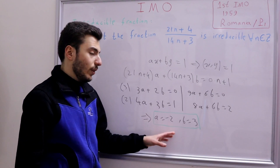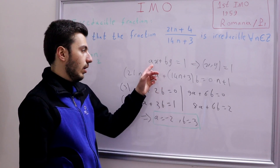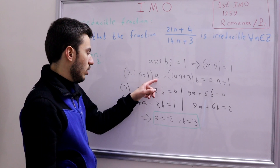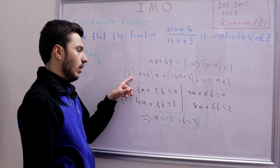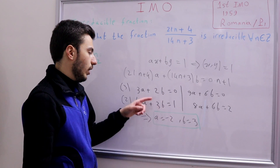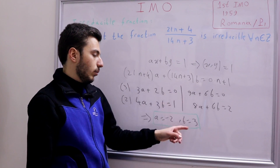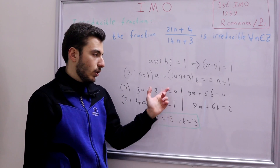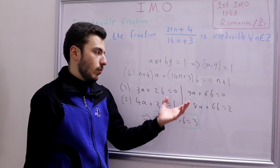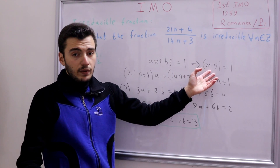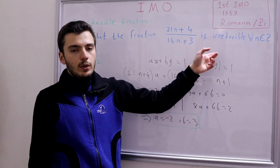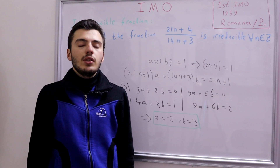Let's verify: (−2)(21n+4) + 3(14n+3) = −42n − 8 + 42n + 9 = 1. It checks out. By Bezout's theorem, this confirms that ax + by = 1, so the GCD of the numerator and denominator is 1, meaning they are relatively prime and the fraction is irreducible. Solution 2 is complete.